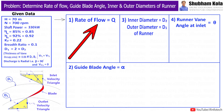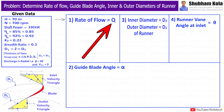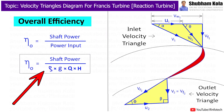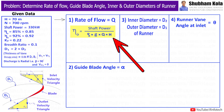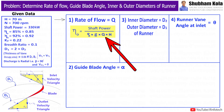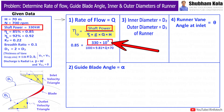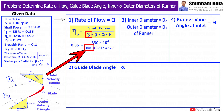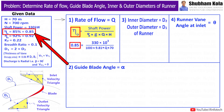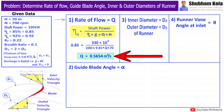First we need to find out rate of flow Q. The formula for overall efficiency is shaft power divided by input power, where input power is ρgQH. We know shaft power, net head H, density of water ρ = 1000, and g = 9.81. Substituting all these values, we solve for the rate of flow Q = 0.5654 m³/s.